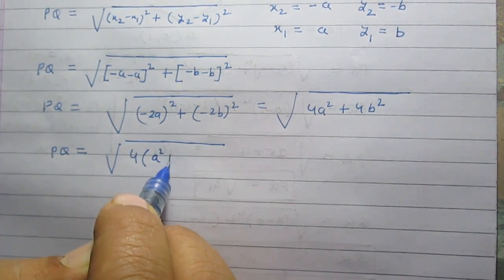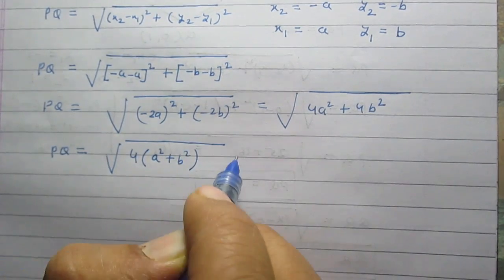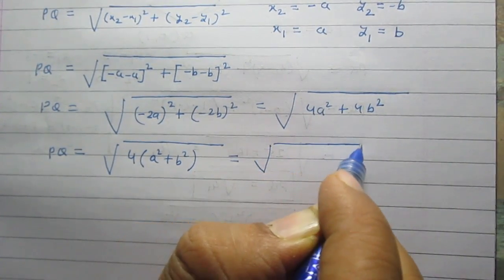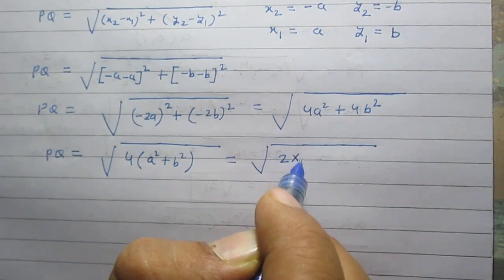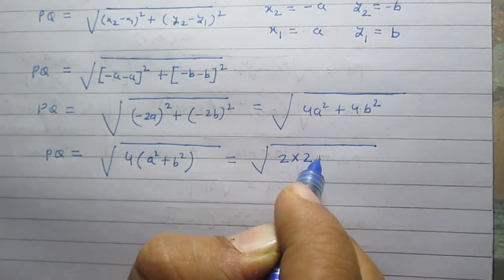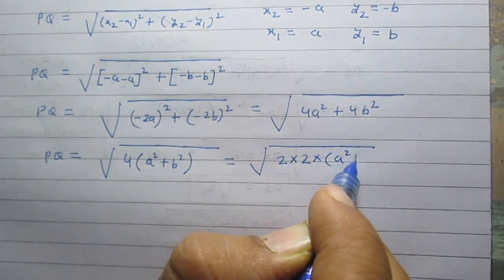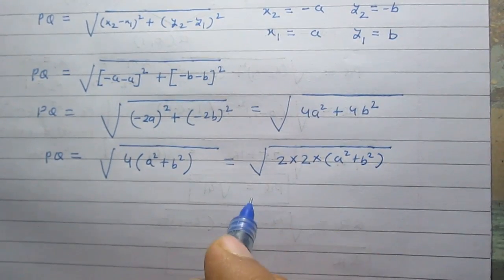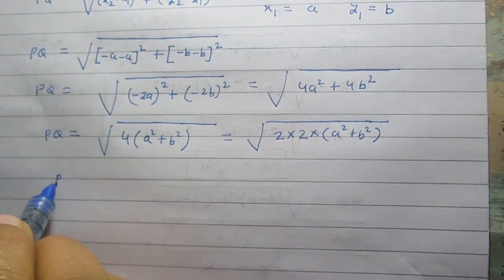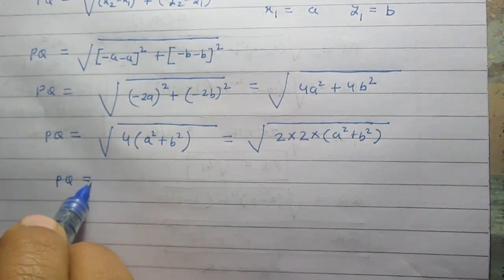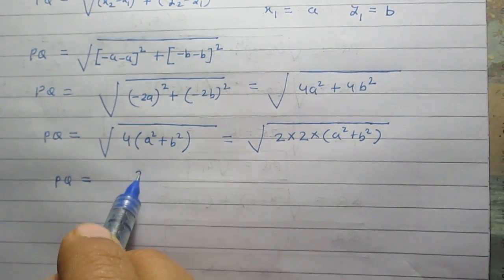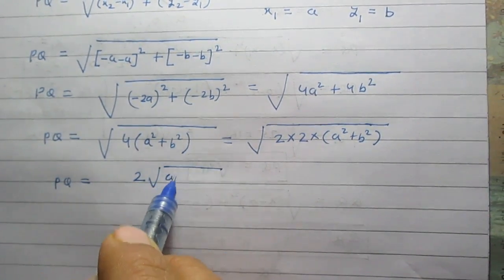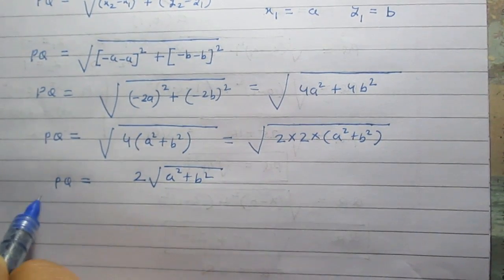Further simplifying, PQ equals the square root of 4 multiplied by (a squared plus b squared), which can be written as the square root of 2 multiplied by 2 multiplied by (a squared plus b squared). So PQ equals 2 multiplied by the square root of (a squared plus b squared).